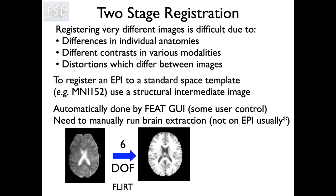By splitting into stages, each individual stage is easier. The first stage registers the EPI functional image to the T1-weighted image of the same individual. Because it's a within-subject problem, a six-degree-of-freedom rigid body transformation is appropriate — that's a linear registration. I can use multimodal cost functions, and importantly I don't have to deal with changing anatomy. I know the anatomy is the same; all the folding patterns are identical between the two, simplifying the problem considerably.